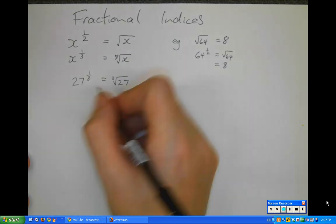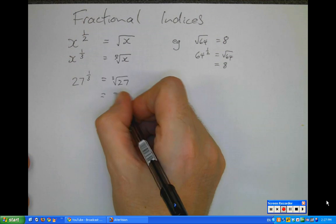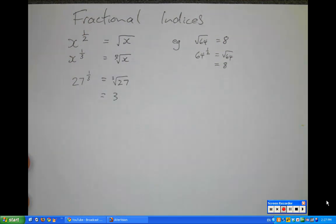So the cube root of 27, I happen to know, is 3. 3 times 3 is 9 times 3 is 27.